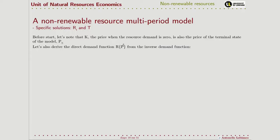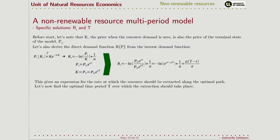Let's derive from our inverse demand function the direct demand function of the resource as a function of price. When we do that, we notice that at any moment in time the price can be seen as a function of the initial price, so we can replace accordingly. Because K is the price at the final moment in time, we can substitute with that expression. We have a ratio inside the logarithm, which we can simplify, and we end up with an equation that describes the temporal path — the dynamic of the optimal extraction of the natural resources.